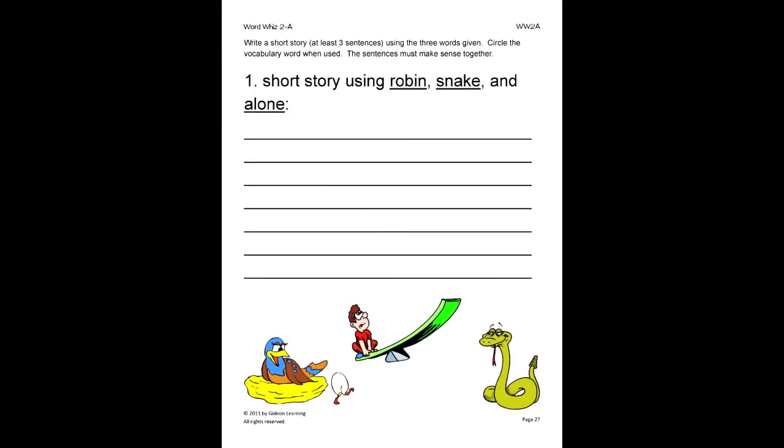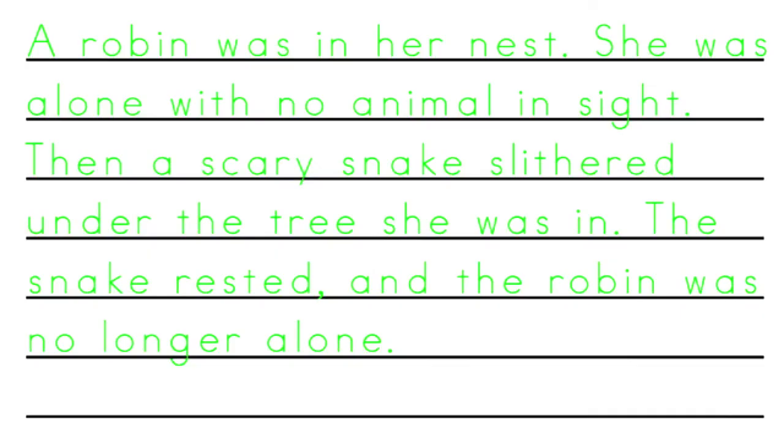Lastly, the student will write a short story of at least three sentences. Be sure that the sentences make sense together. A good story would be like this one. A robin was in her nest. She was alone with no animal in sight. Then, a scary snake slithered under the tree she was in. The snake rested and the robin was no longer alone.